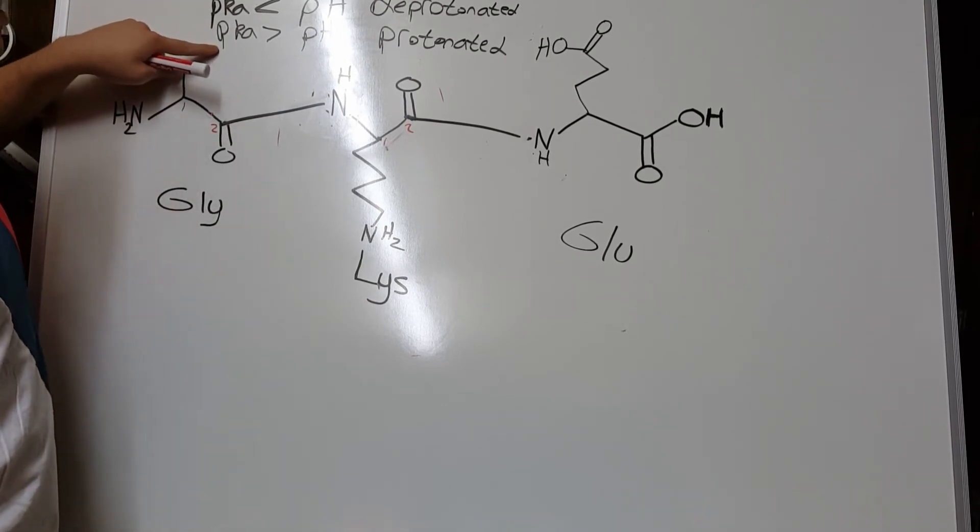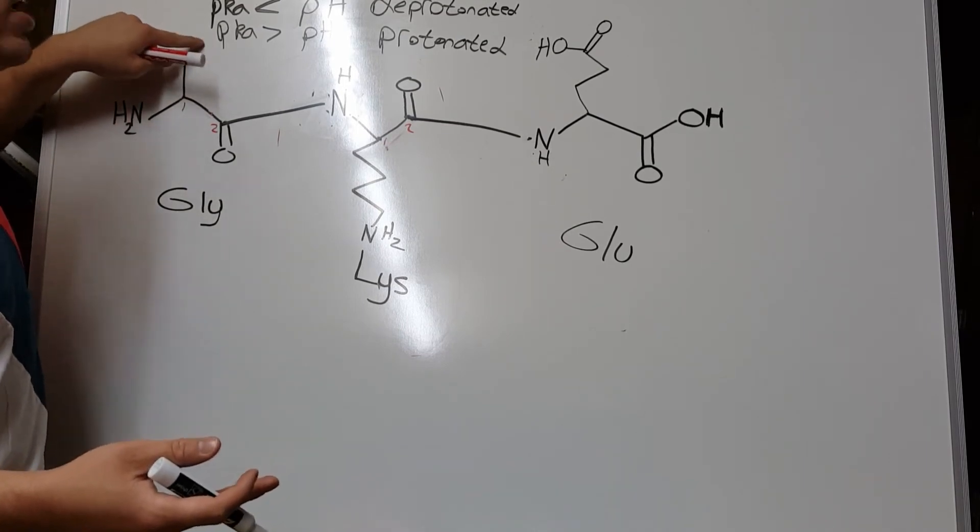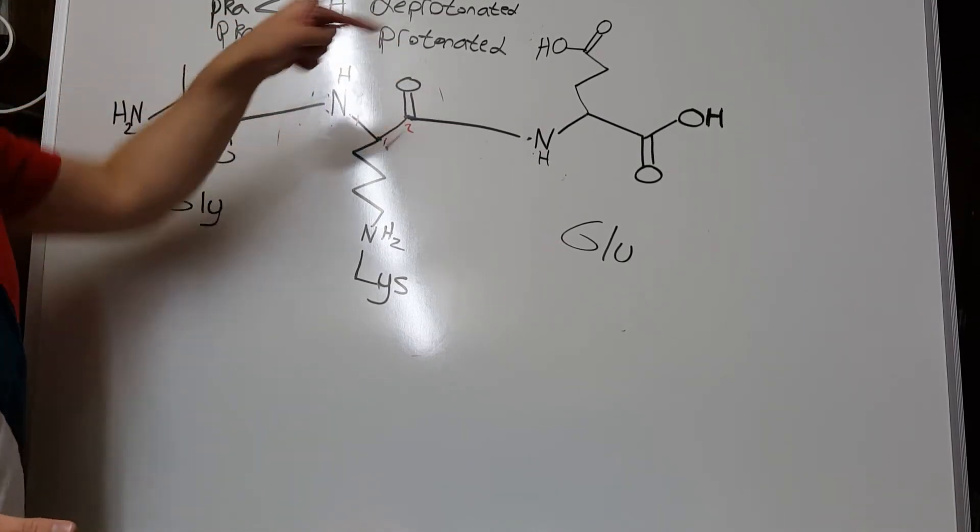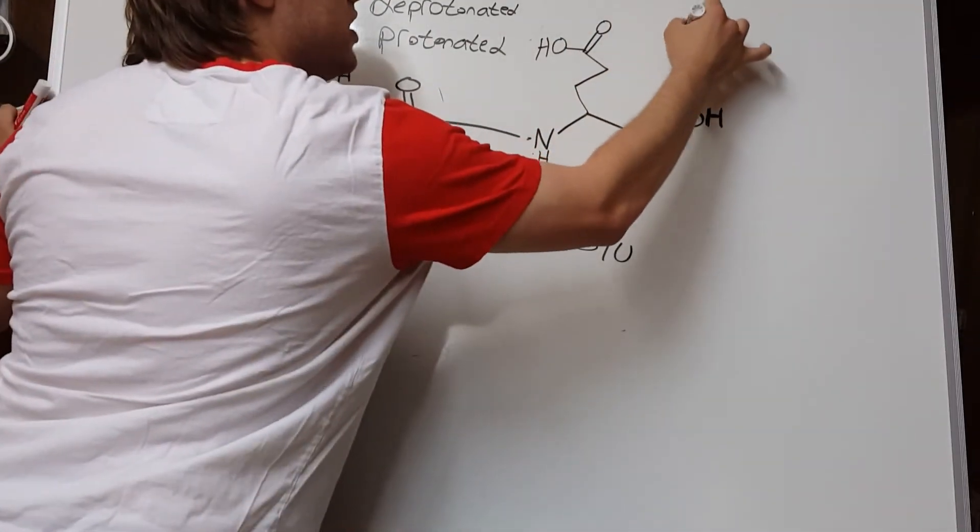Whereas, if your pKa is greater than your pH, now you're more basic than the solution you're dissolved in. So, if you're a base surrounded in acid, you'll get protons. Once again, I said let's mix this into a pH of 7.